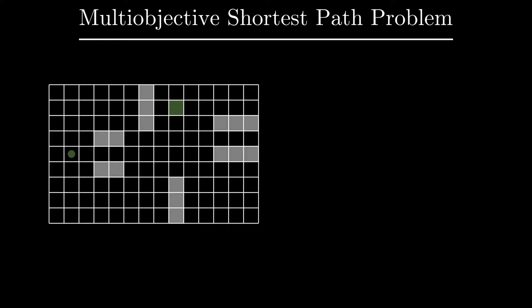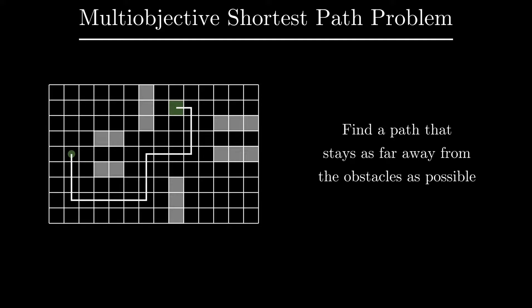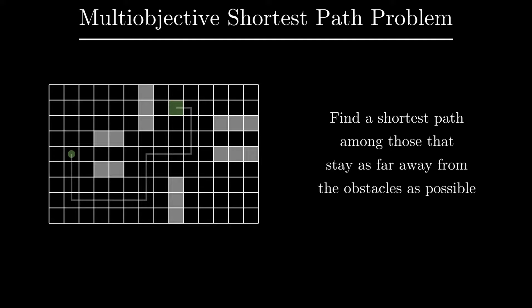What if our cost value cannot be modeled by a single real number? For instance, what if our objective is to find a path to the goal that stays as far away from all the obstacles as possible? Since there will typically be many paths that optimize that objective, let us say we would like to find the shortest one among them.